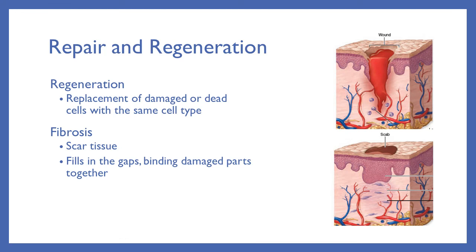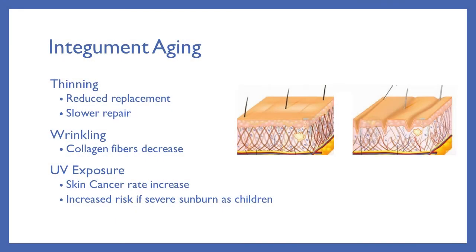Your skin takes a lot of damage throughout life. When damage occurs, the body repairs it through regeneration — replacing damaged or dead cells with new ones — if the area is small. For larger areas of damage, the body uses fibrous repair, filling the area with scar tissue. In this case, dermal structures are lost — scars may lack hair follicles and look different from surrounding skin. Over time, the integument ages and thins, wrinkles form as collagen decreases, and UV exposure increases skin cancer risk.